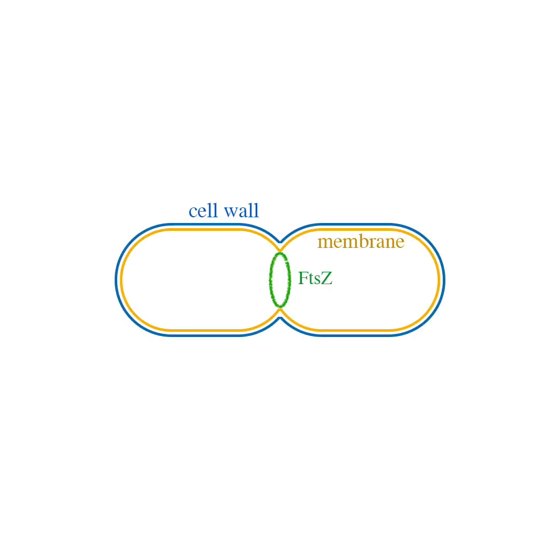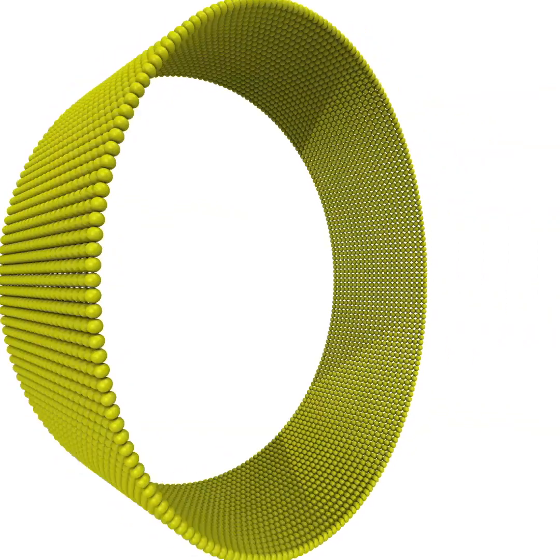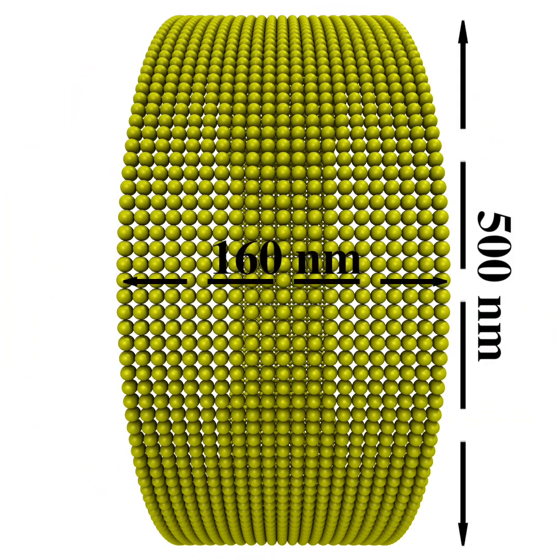Here we use simulations to explore different mechanistic models of how FtsZ might constrict cells. We model the membrane as a sheathed bead, originally forming a cylinder, shown here in yellow.